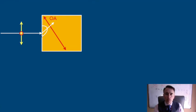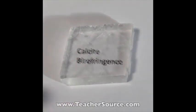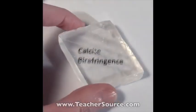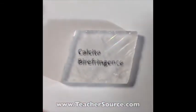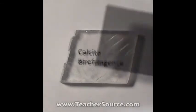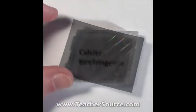If we have calcite, for example, over a paper with written text, we will see two images of the text. One of them will be fixed, and the other will rotate as we rotate the crystal, as we are rotating the optic axis.